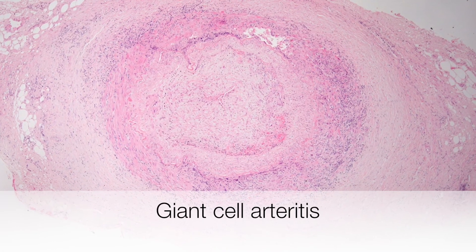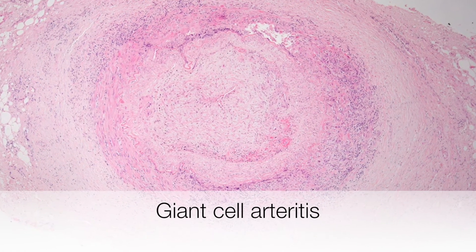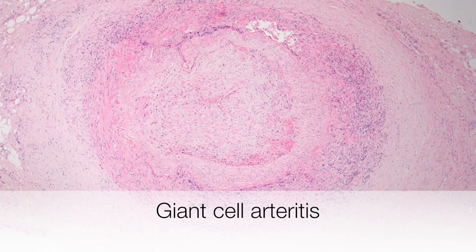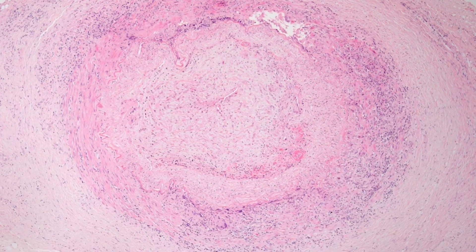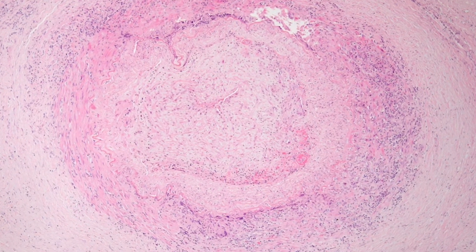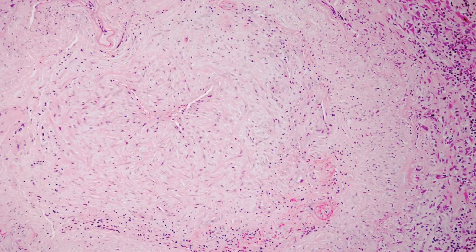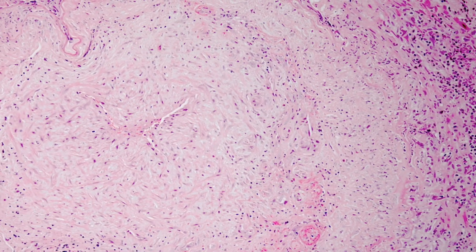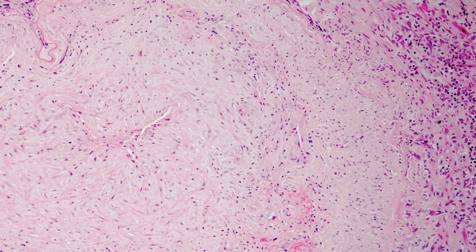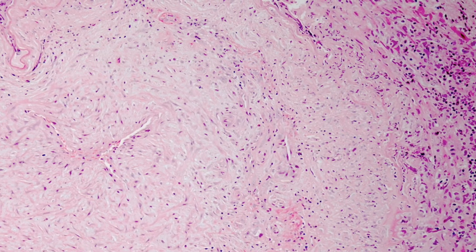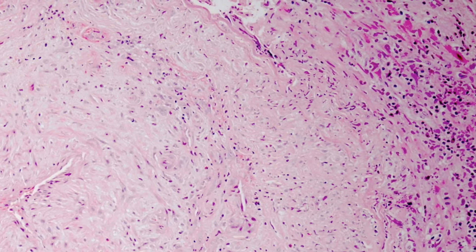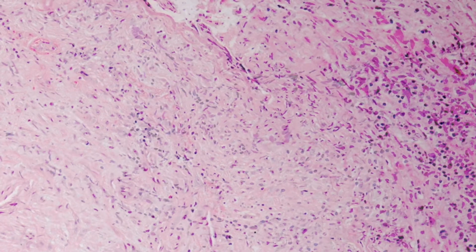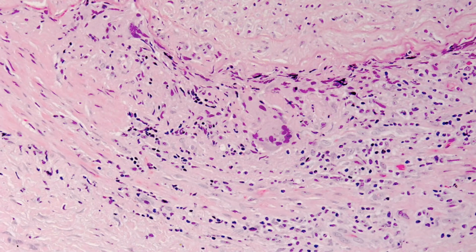In this low power view of the temporal artery biopsy, you can see that the temporal artery lumen is completely occluded. On higher power, you can see that there is a chronic inflammatory infiltrate composed of lymphocytes, histiocytes, and giant cells.